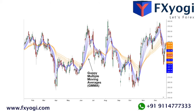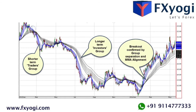The Guppy is composed of 12 EMAs, or exponential moving averages. The multiple lines help traders see the strength or weakness in a trend better than if only using one or two EMAs. The 12 EMAs are separated into two groups: one short-term group of EMAs and one long-term group of EMAs, with each group containing six EMAs.